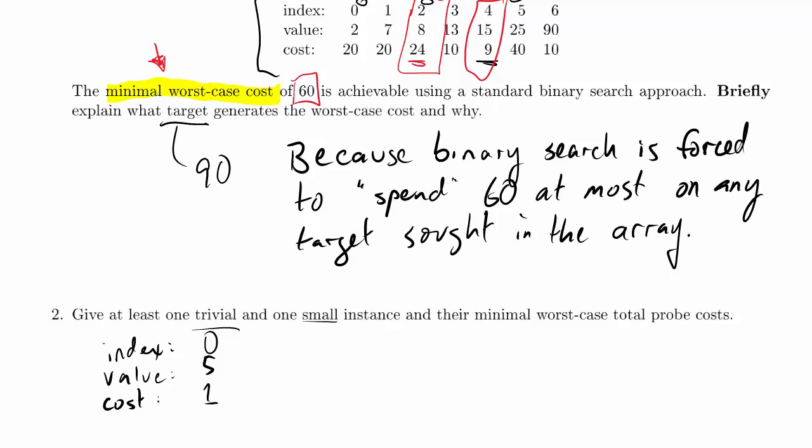So we might look at three instances here: one where we're searching for five, one where we're searching for zero, and one where we're searching for ten, just to have different targets that force us into the only different scenarios that are interesting here. So let's do a small instance, you know, two indexes, maybe three. Let's go with two.